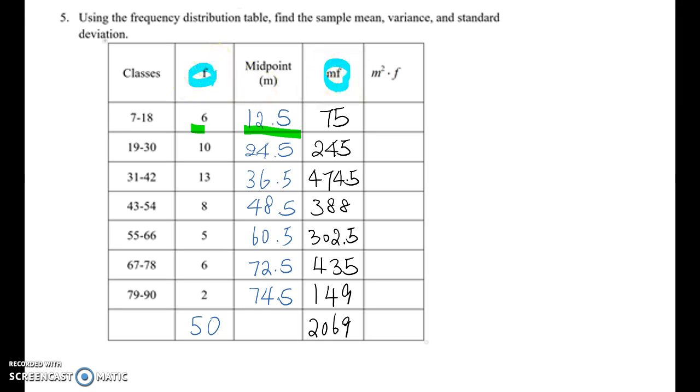So mean x-bar equals 2069 divided by 50. That's 41.38.